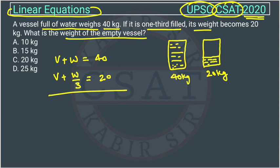We can solve these two equations and we can find out the answer easily. Let us deduct them. If we will minus them, then this V will cancel out. So, it will become W minus W by 3 is equal to 20.